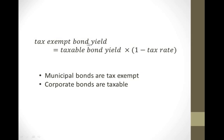The tax exempt bond yield equals taxable bond yield times one minus the tax rate. Municipal bonds are tax exempt. Corporate bonds are taxable in our examples.